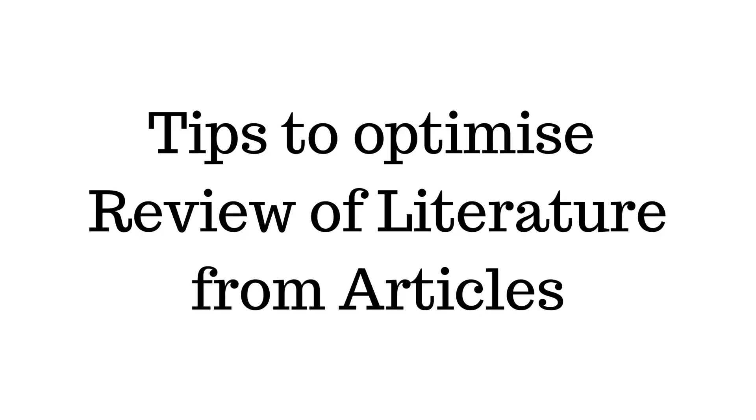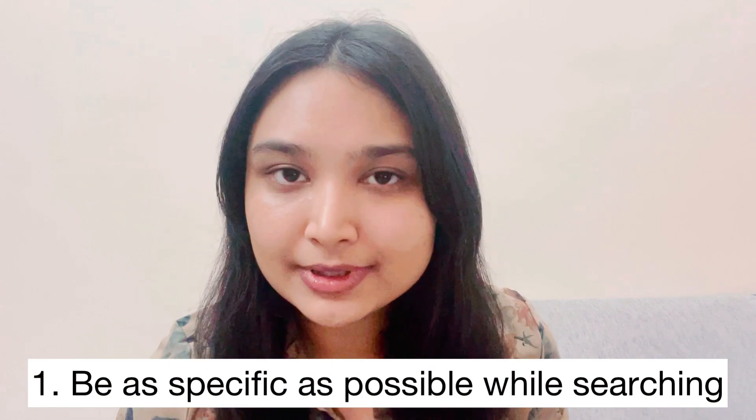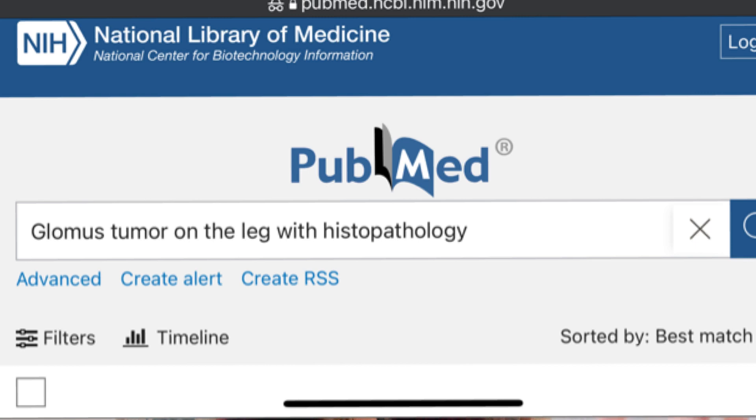There are four tips on how to review literature from articles efficiently. Number one: be as specific as possible when searching for articles related to your case report. For example, if I want to write about an interesting case of a glomus tumour on the leg with atypical histopathological findings, I won't just search 'glomus tumour.' It's better to search for 'extra-digital glomus tumour on the leg with atypical histopathological findings.' You have to narrow down your searches systematically based on what makes your case unique.